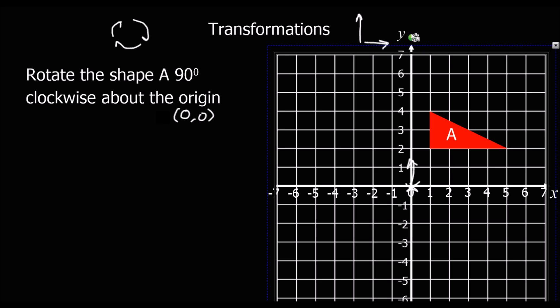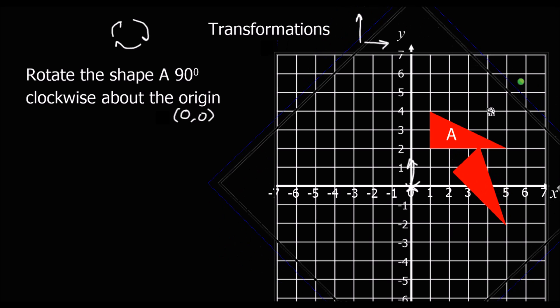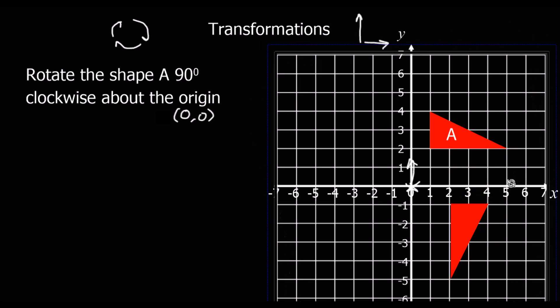So we hold the tracing paper there, and it should spin around from there until we get to 90 degrees, so that's until I get there. So that little arrow should now be facing that way, and so that has been spun around 90 degrees about the origin. That's our new shape there.